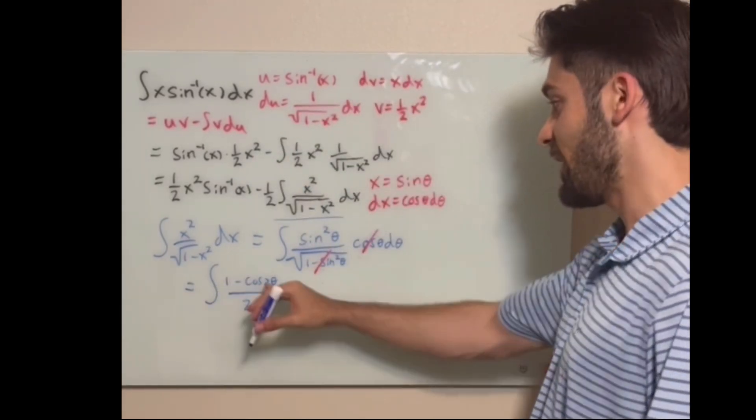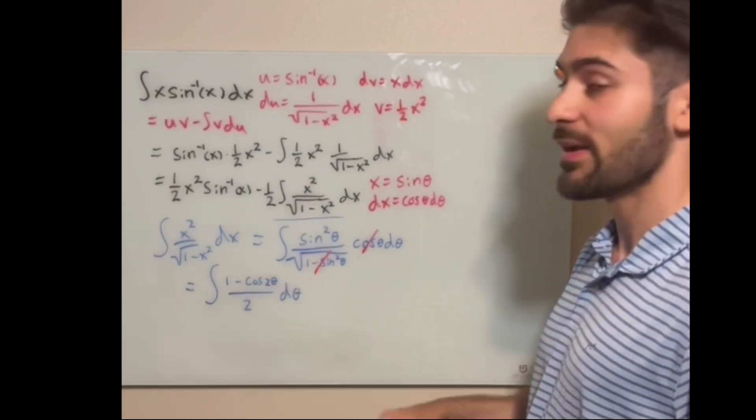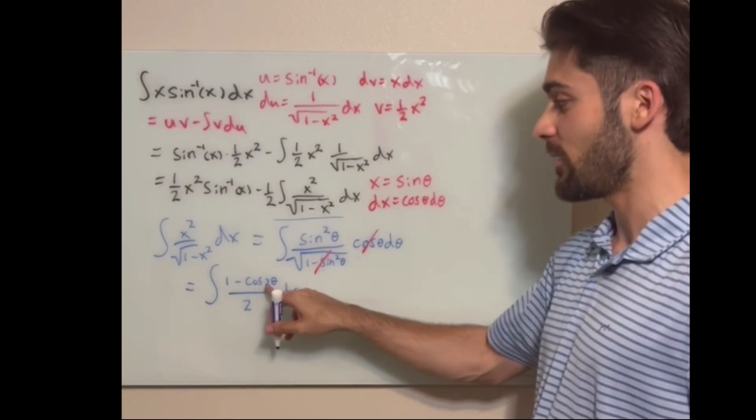The one half will just become one half theta, and the cosine 2 theta will become sine, but because we have 2 in the inside, we divide by 2 again.